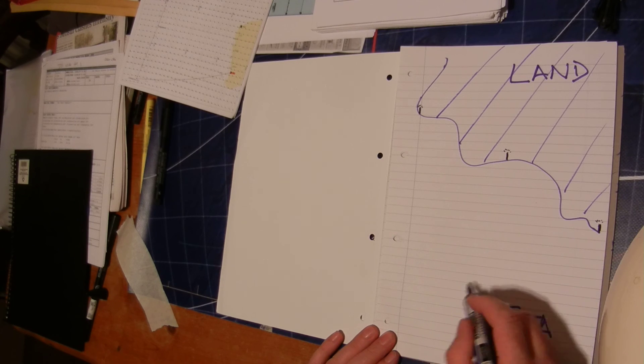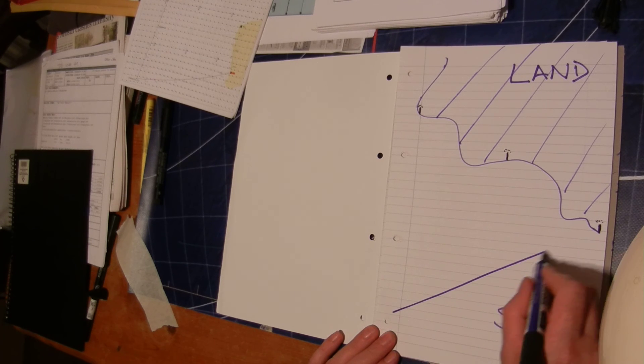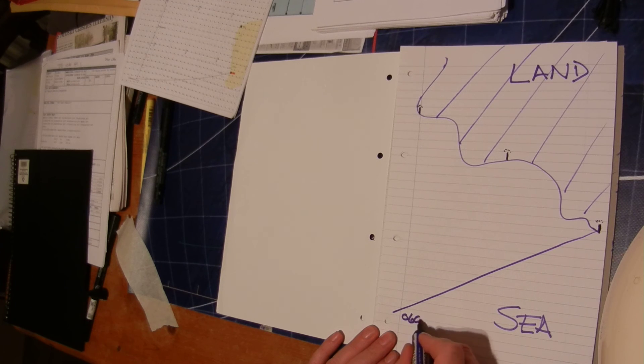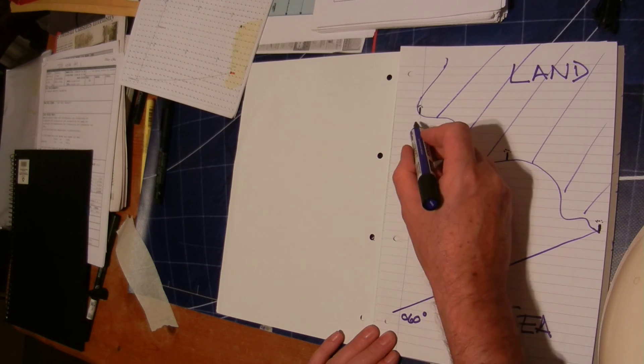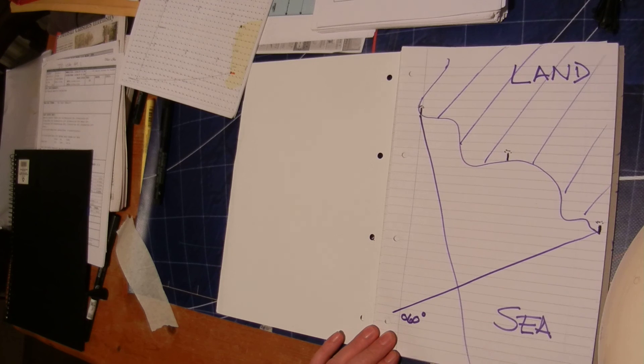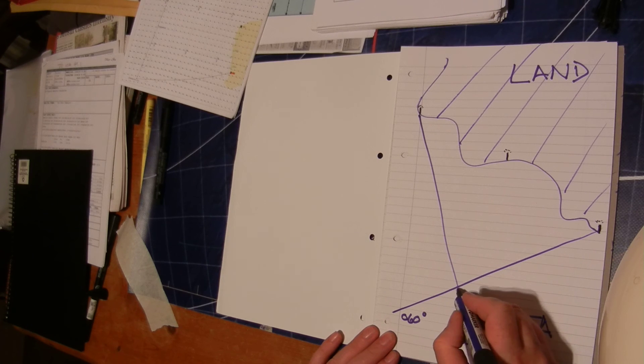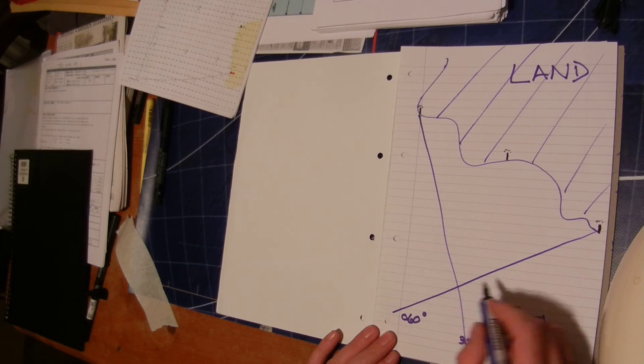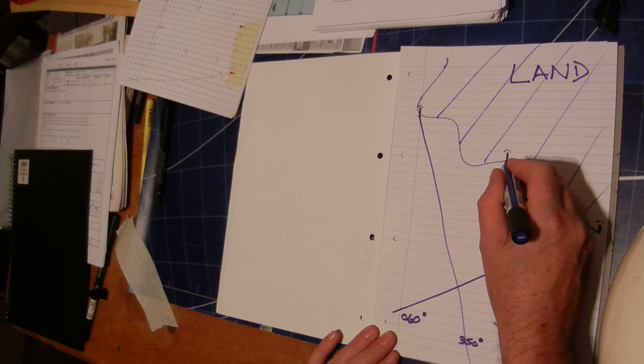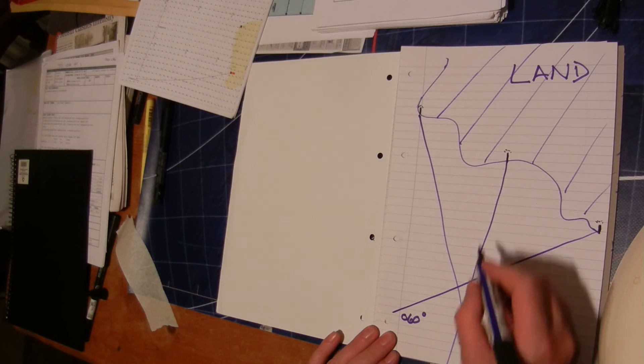So we take a bearing from the first one and it's easy to say we're on a bearing of 060 degrees from this one. Then we get another bearing from this one, and it says looking up there we're looking at 350 degrees. As you can see, two lines always cross somewhere, but we're not sure whether that's accurate or not so we take a third one.